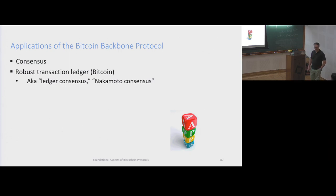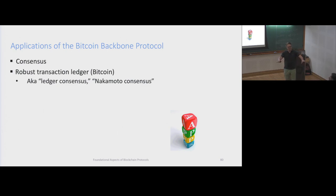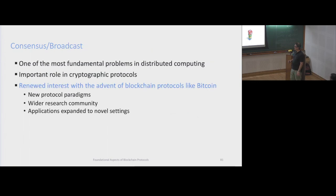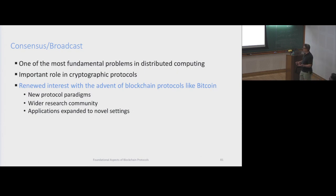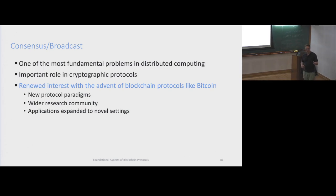Let's start with the consensus problem. We see this agreement, consistency type thing, which already started thinking about consensus. But the consensus problem is more specific - we started looking into this because of a Nakamoto observation. This is one of the important, fundamental problems in distributed computing, and plays a role in cryptographic protocols.